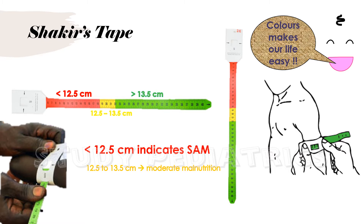Yellow indicates mild to moderate malnutrition, where the value lies between 12.5 to 13.5 cm. Green color indicates adequate nutrition, and the value lies above 13.5 cm. Note that the color here is more valuable than the readings.